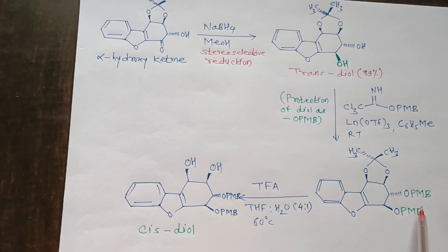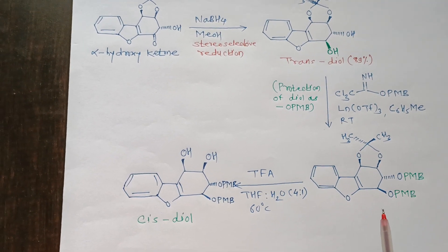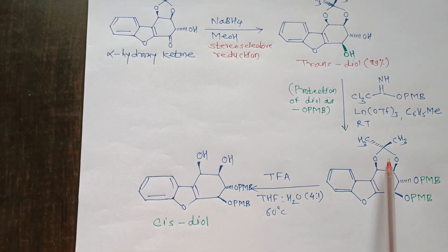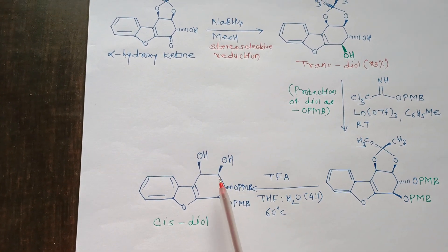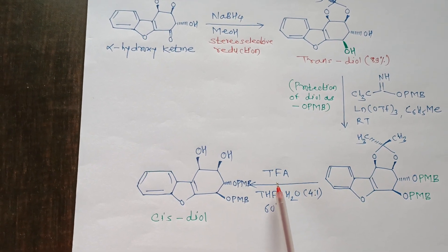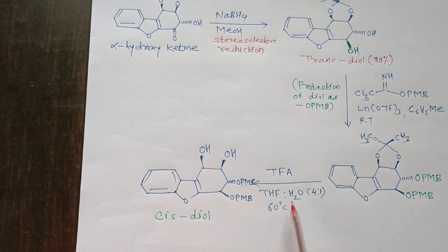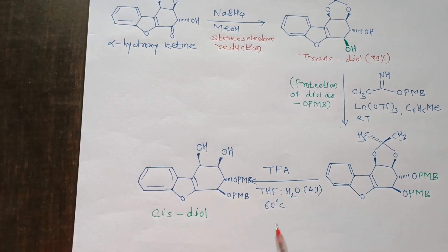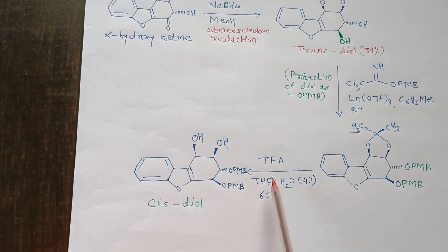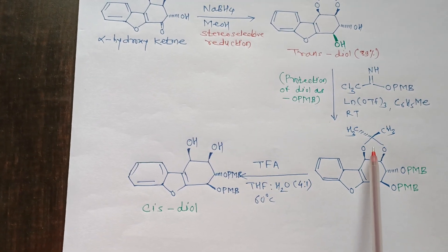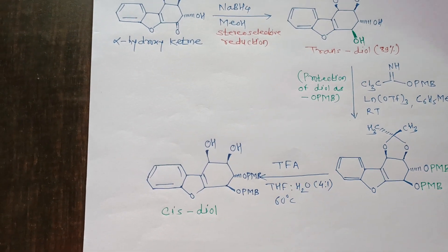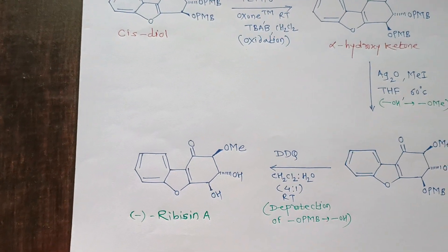The protection of the acetonide ketal group into cis-diol was achieved using trifluoroacetic acid in the presence of a THF/water solvent system at 60°C. Under such acidic conditions, the acetonide group undergoes deprotection to give the corresponding cis-diol.